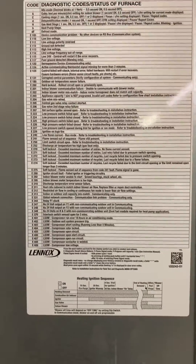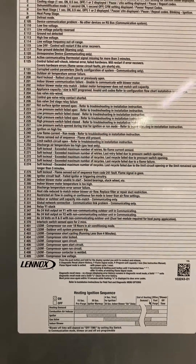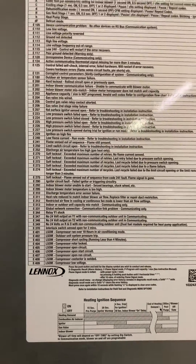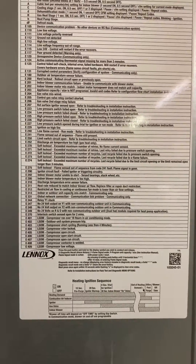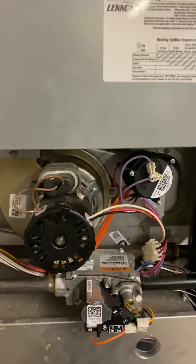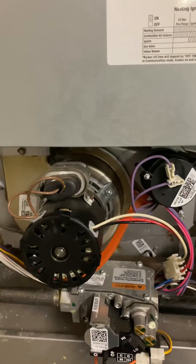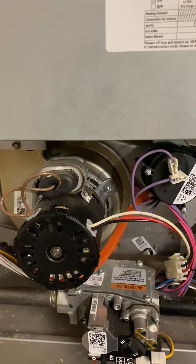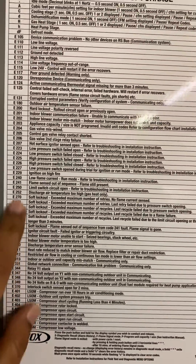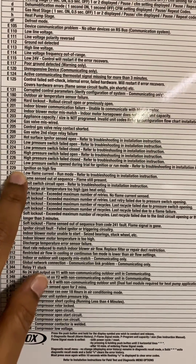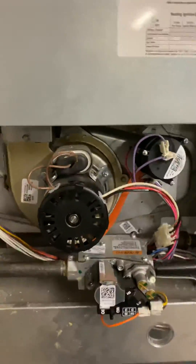This video is for anyone with the Lennox SL280 HVAC system. Over the life of it, you'll typically hit error codes for the low or high pressure switch failing to open or close — typically error codes like 22, 229, 227, 223, and things like that.